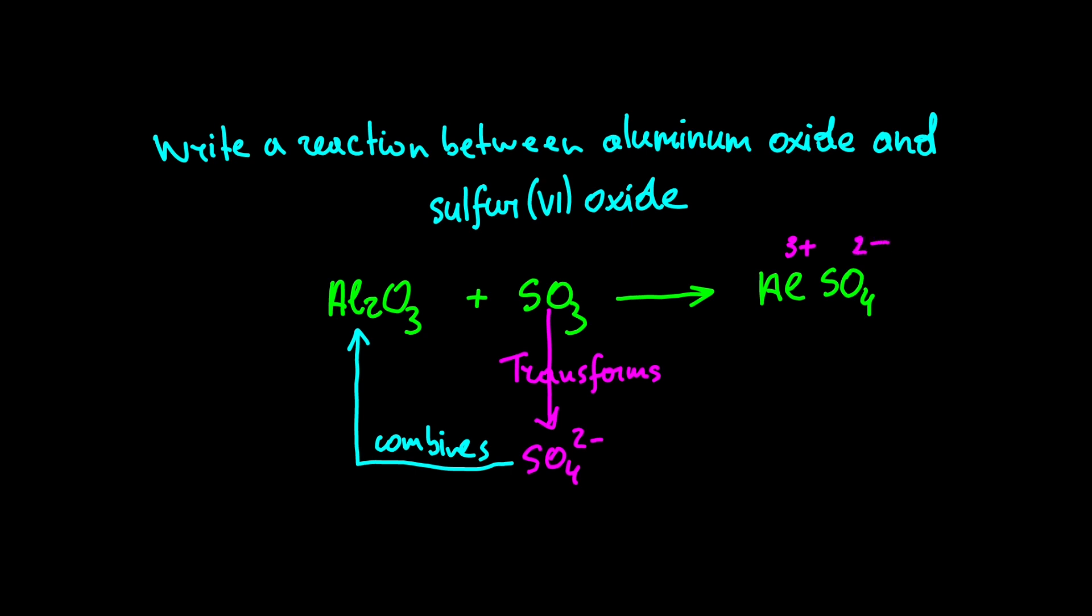Don't forget to swap charges with subscripts, and we get Al2(SO4)3. To balance the equation, we write 3 in front of SO3 because after the reaction, we have three sulfur atoms, and now the reaction is completed.